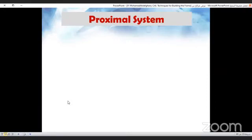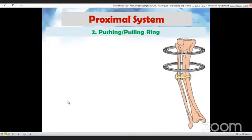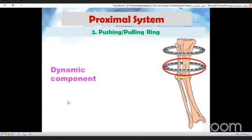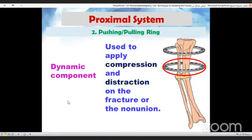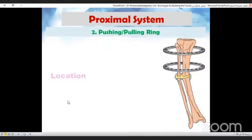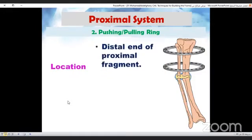Now the second ring in the proximal block is the pushing pulling ring. This one in the circle, the red circle. This is a dynamic component of this block. It is used to apply compression and distraction on the fracture or nonunion site. This pushing pulling ring is applied to the distal end of the proximal fragment to achieve stable fixation.